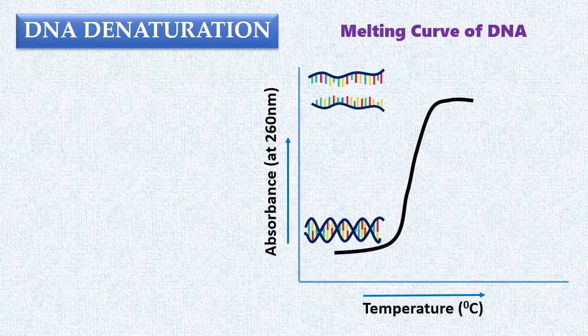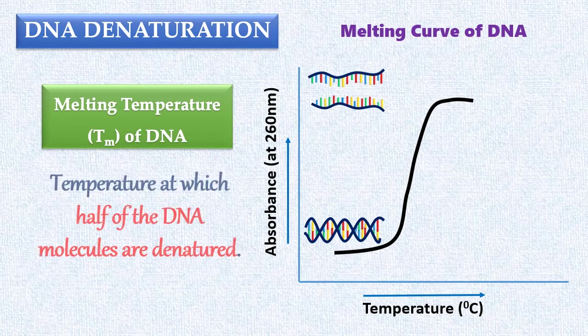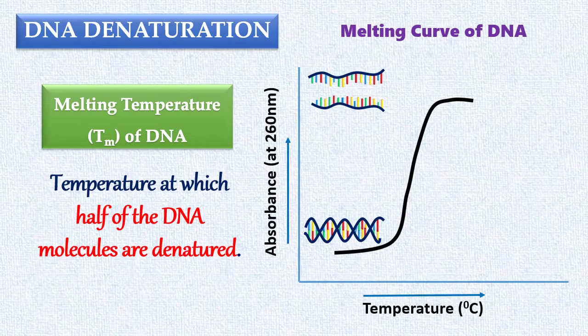In the previous video lecture, we studied denaturation of DNA. We understood that the melting temperature of the DNA is the temperature at which half of the DNA molecules are denatured, and it is found at the midpoint of the melting curve of DNA.